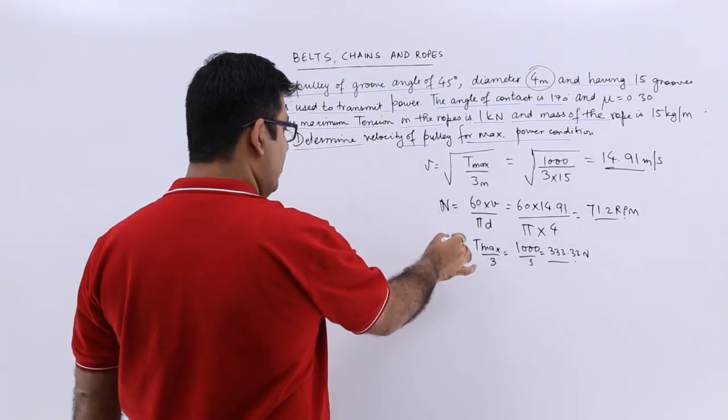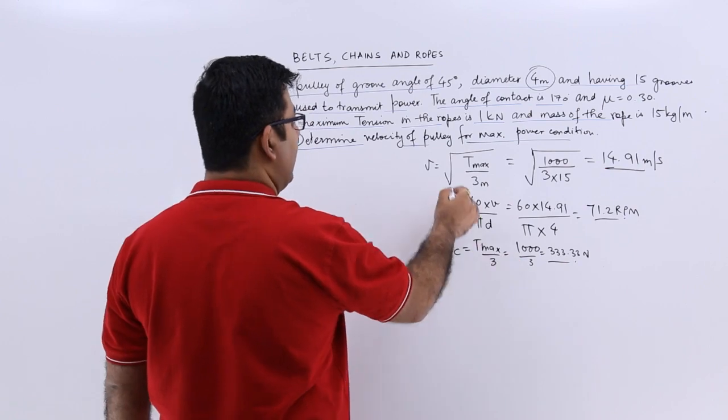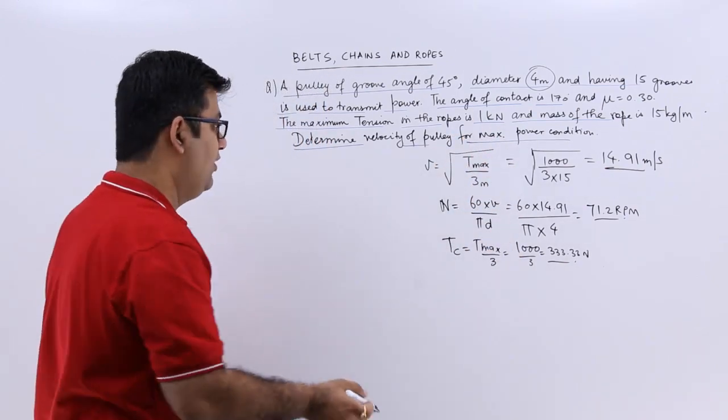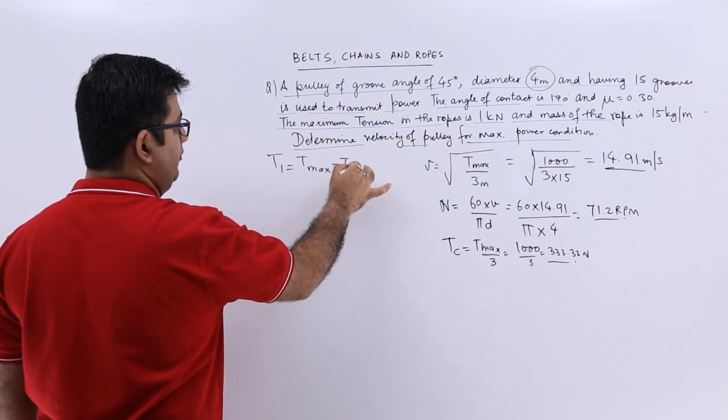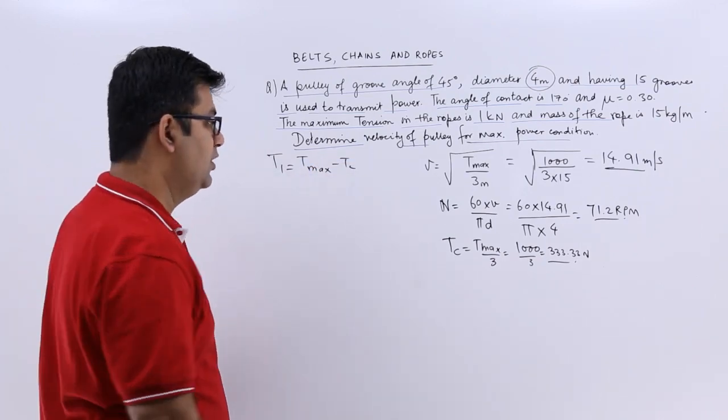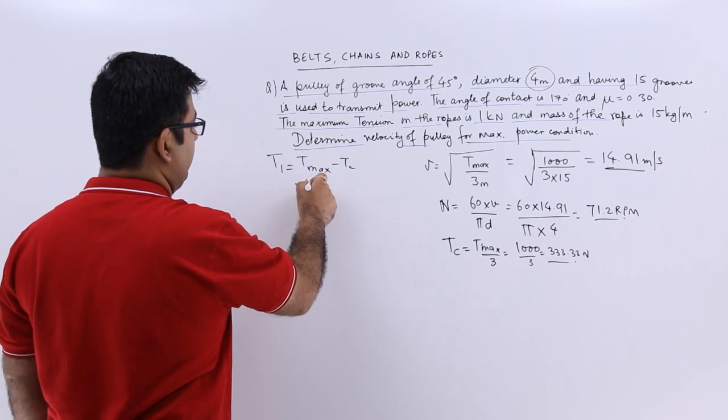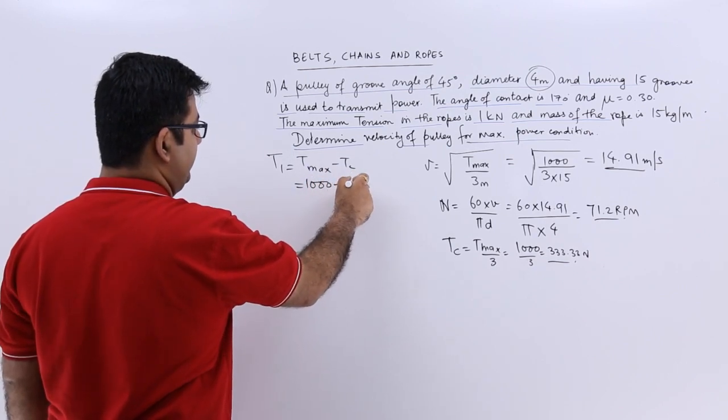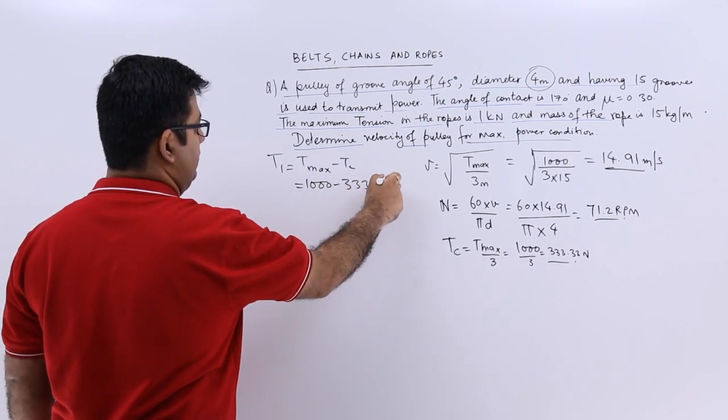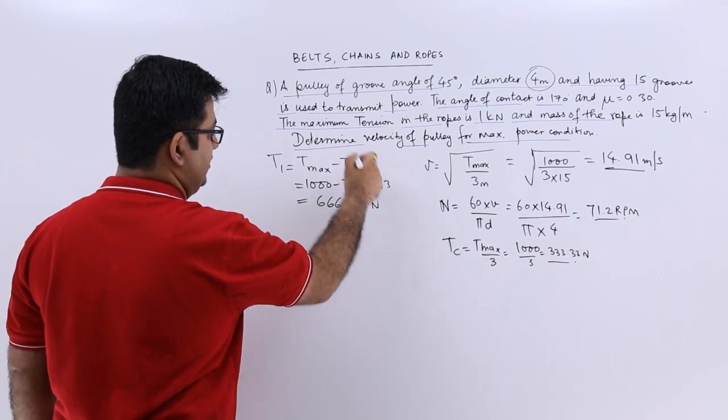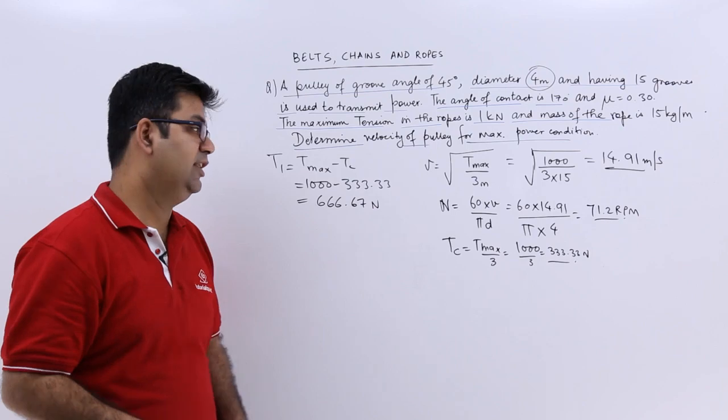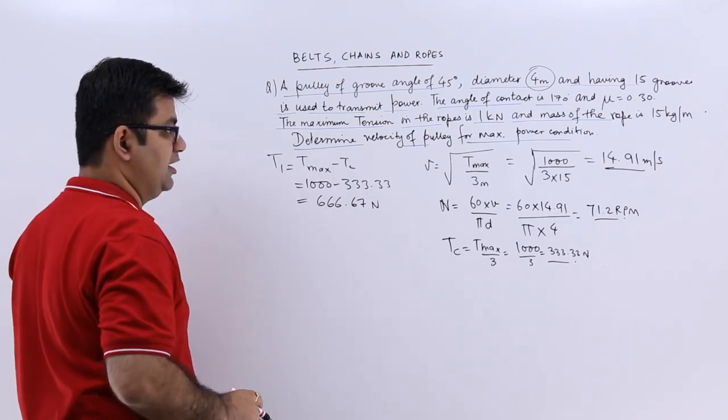So with centrifugal tension calculated, the maximum tension we know, we can find out the tension in the tight side which is T max minus Tc. So this is 1000 minus 333.33 which will give you 666.67 newtons. That is the tension in the tight side.